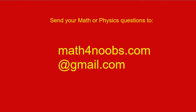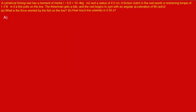Send your math or physics questions to mathfornoobs.com at gmail.com. A cylindrical fishing reel has a moment of inertia and radius. A friction clutch in the reel exerts a restraining torque if a fish pulls on the line. The fisherman gets a bite and the reel begins to spin with an angular acceleration. Part A asks for the force exerted by the fish on the line.